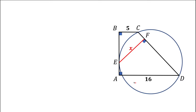Here we have a trapezoid ABCD. This is a right trapezoid, which means that the side AB is at 90 degrees to the bases AD and BC. We know the lengths of both bases, and there's also a circle — the circle goes through points C and D, and the side AB is tangent to the circle, with the point of tangency E lying on the side AB.